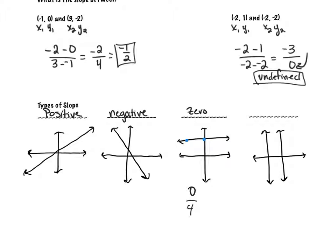No matter what, if you see a horizontal line you know its slope is zero without any calculation. Similarly for a vertical line: if you take two points on it, the horizontal change is zero — you're not going anywhere horizontally. So you're back to dividing by zero, which means any vertical line has an undefined slope.